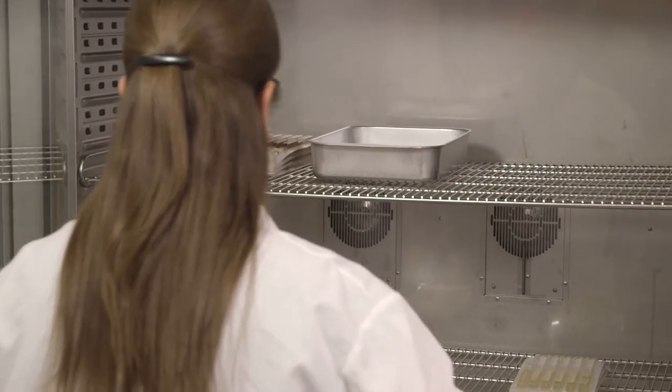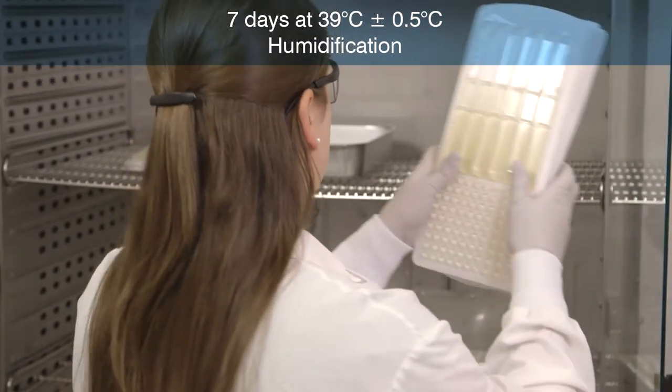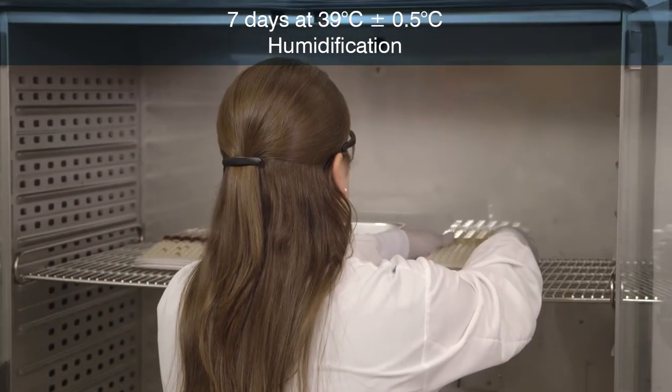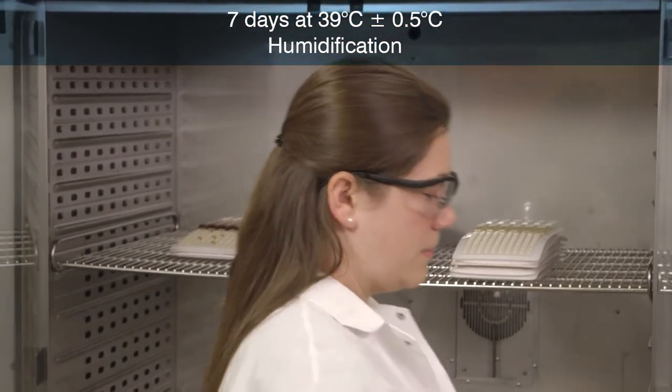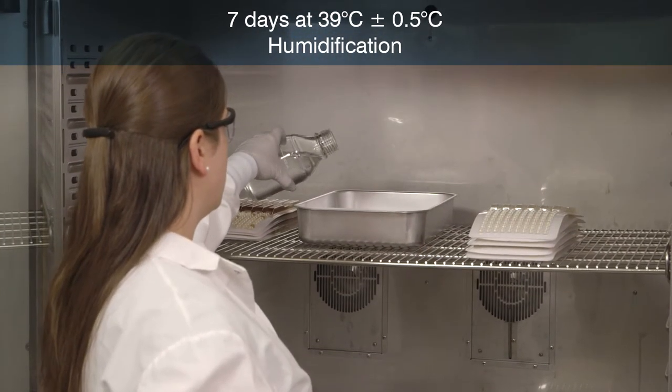Incubate the sealed tray, paper side down, for 7 days at 39 degrees centigrade, plus or minus 0.5 degrees centigrade. Alternate the trays top to bottom. To prevent trays from drying out, humidify the incubator.